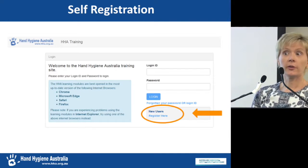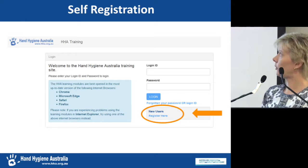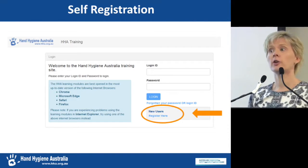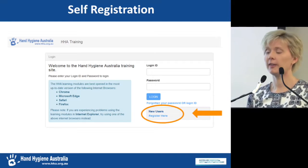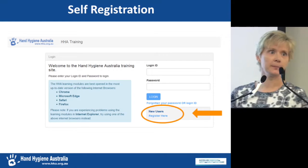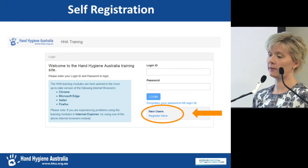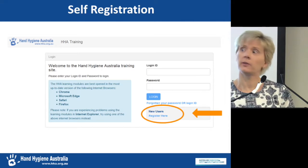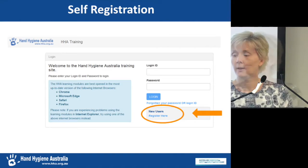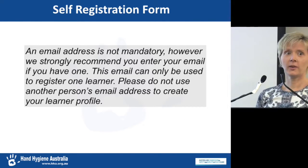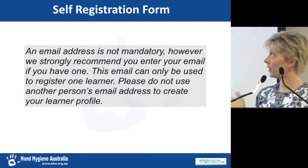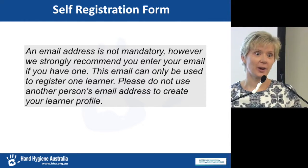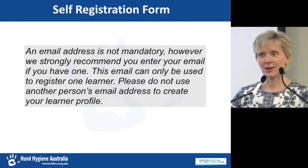When directing people to use the system for the first time, direct them to register as a new user. There is a self-registration form with mandatory content: their name, an employee number, and an organisation if it's within the system. An email address is not mandatory because many healthcare workers don't have one, but if you have an email address we strongly encourage you to put it in. Please don't use someone else's email address because then they won't be able to register in the system.